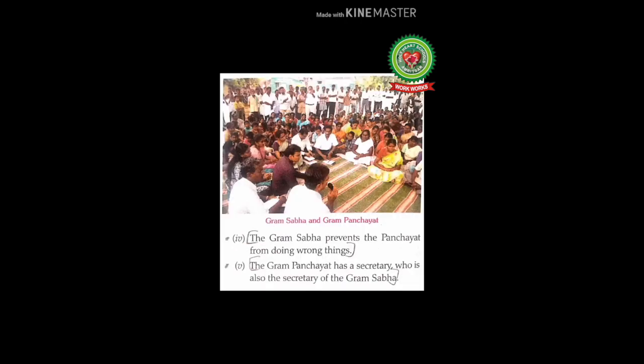Number four: the Gram Sabha prevents the panchayat from doing wrong things. We read this in the functions of the Gram Sabha — it is the duty of the Gram Sabha to prevent the panchayat from doing wrong things like corruption and misuse of money. Number five: the Gram Panchayat has a secretary who is also the secretary of the Gram Sabha. The state government appoints a secretary whose duty is to call the meetings of both the Gram Sabha and the Gram Panchayat. These are the similarities between a Gram Sabha and a Gram Panchayat.